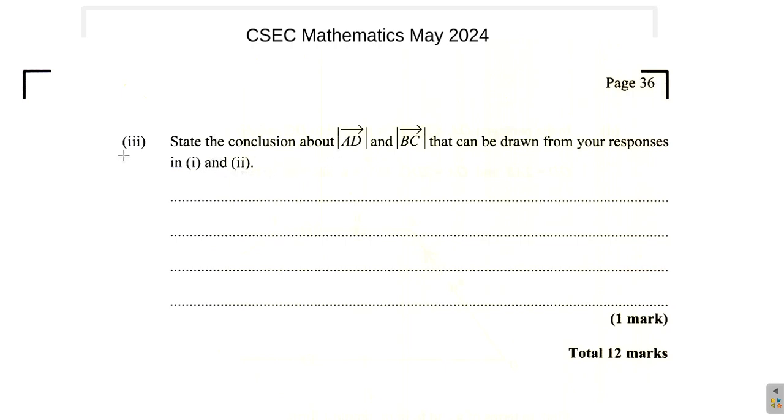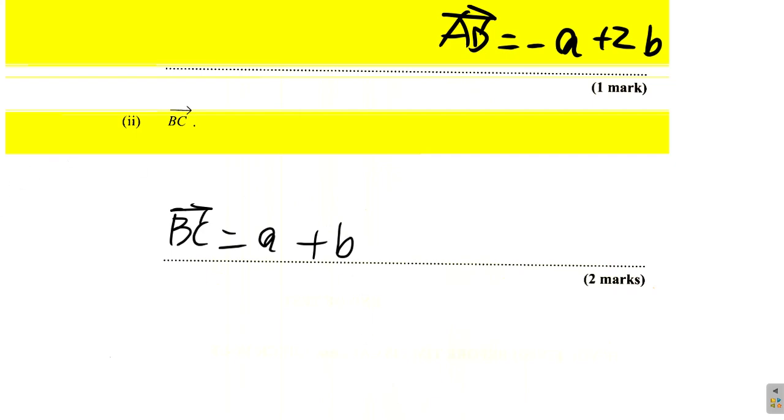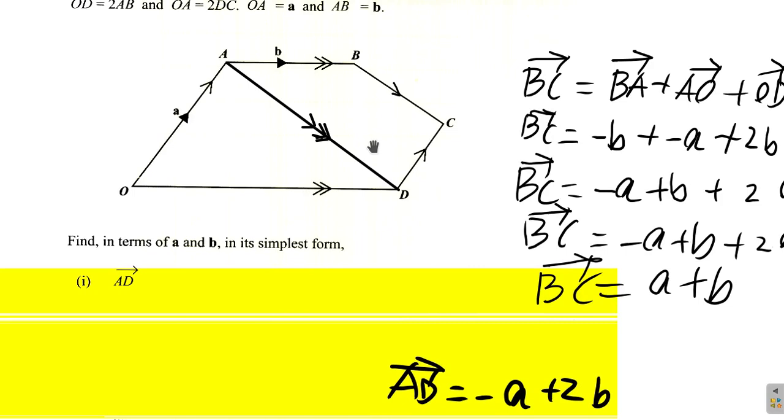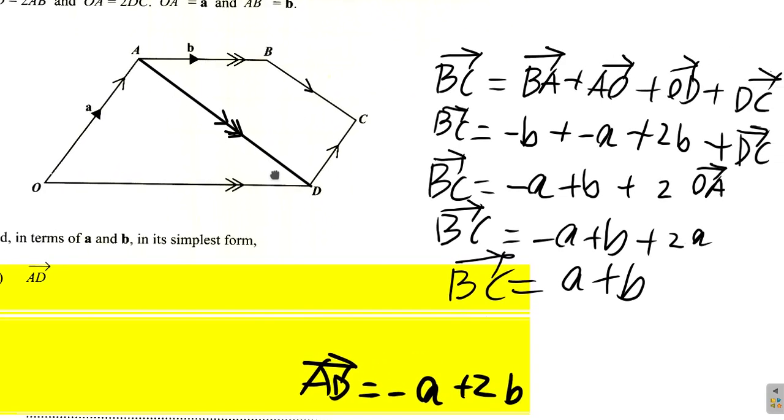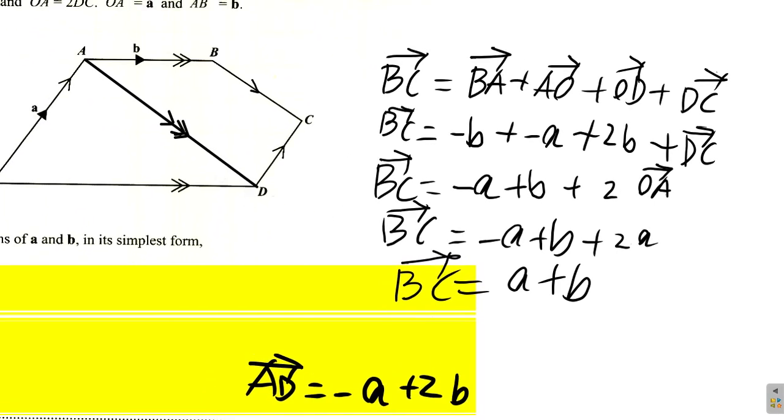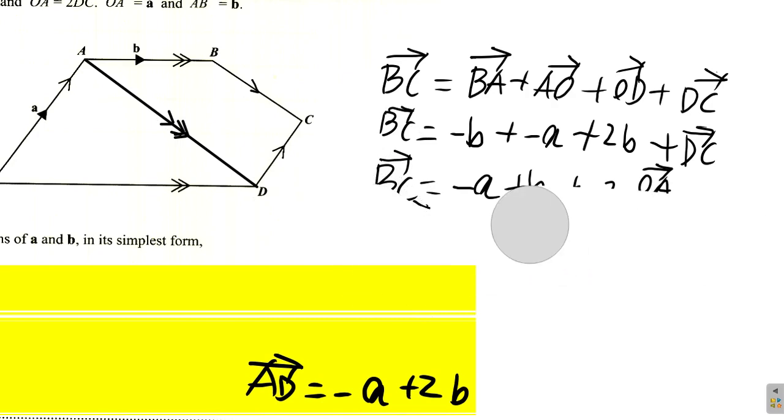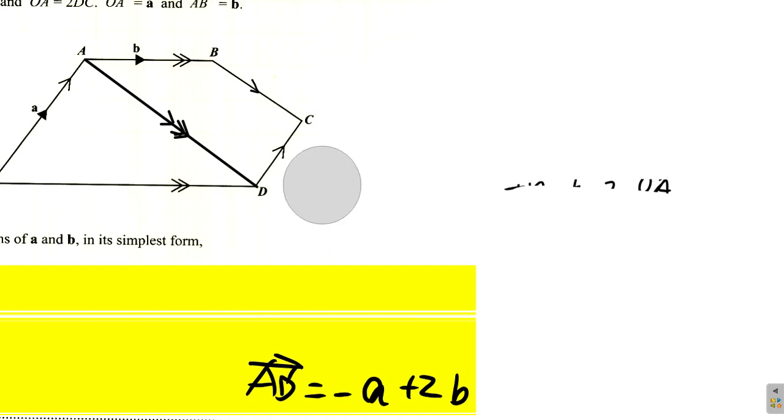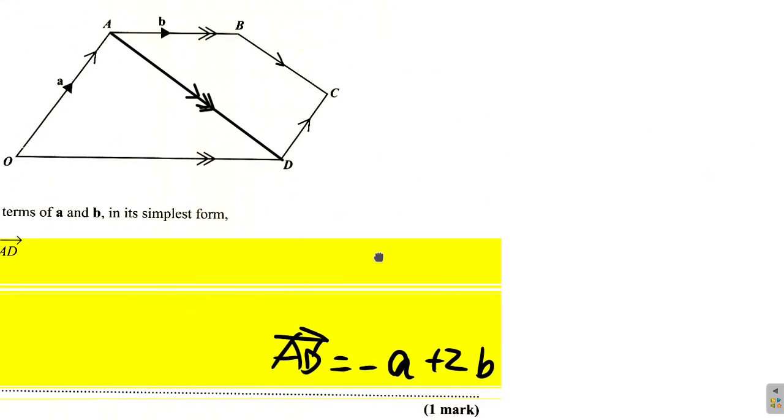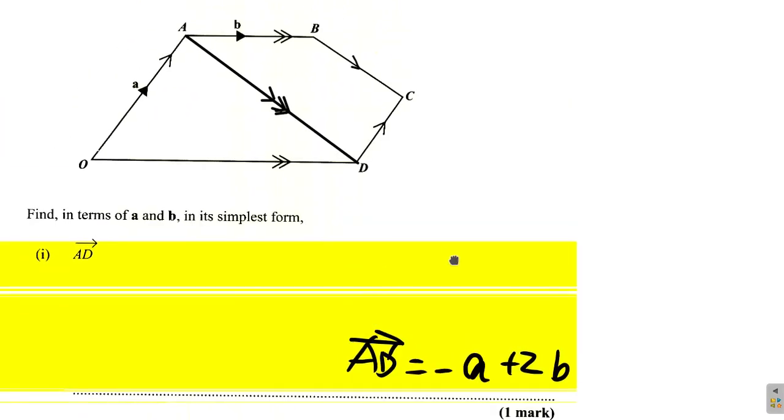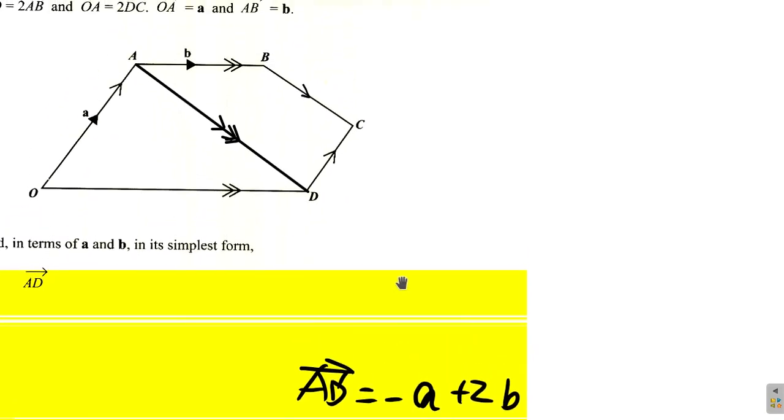State the conclusion about the magnitude of AD and BC that can be drawn from the responses in 1 and 2. AD and BC. The magnitudes of AD and BC. Alright, so let's erase some of these things that we have. What can we conclude about AD and BC, the magnitudes? Now AD, the vector AD is negative a plus 2b. That's the vector AD.